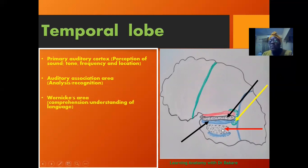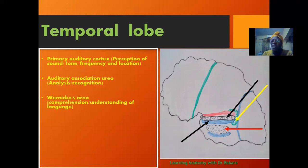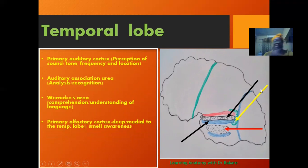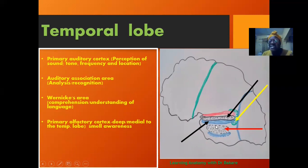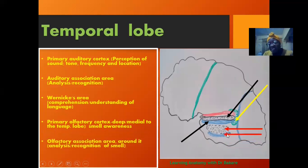The next one is Wernicke's area, located behind the primary auditory cortex and auditory association area, extending a bit into the parietal lobe. It is responsible for the comprehension and understanding of language. Going medial to the primary auditory cortex, located deep in this region, is the olfactory cortex, and around it we also have the olfactory association area.